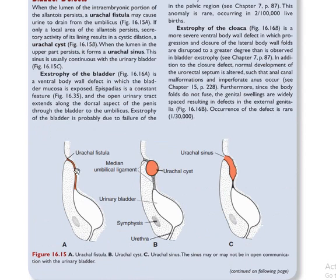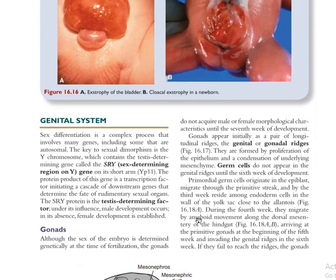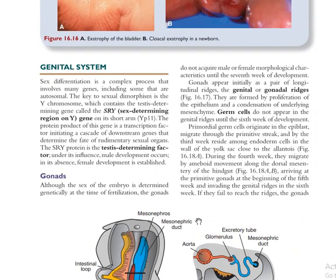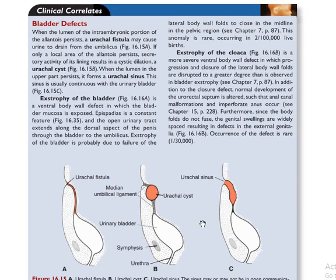Some clinical relevance: here you have a case with no closure of the urachus — the allantois remains in contact so urine can exit through the anterior abdominal wall. Here you have a urachal cyst, where the tissue of the allantois still produces fluid, forming a cyst. Here you have a urachal sinus where the cyst opens to the anterior abdominal wall. This marks the end of the urinary embryology section.